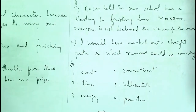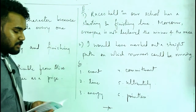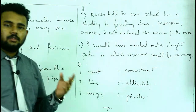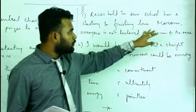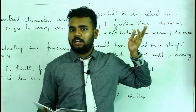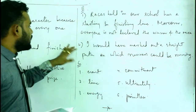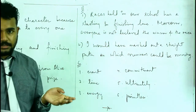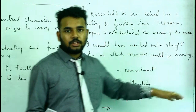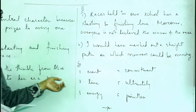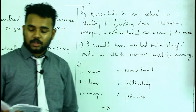Questions three and four you can do by yourself. Question B: how is the race in the story different from a school race? Answer: races in our school have a starting and finishing point, and not everyone is declared the winner. The next part covers sequencing words: time, energy, commitment, and ultimately.